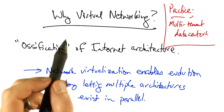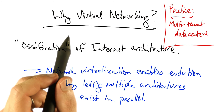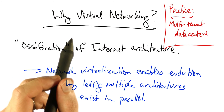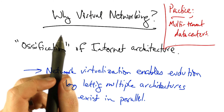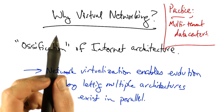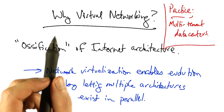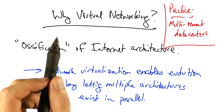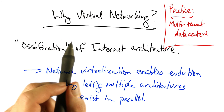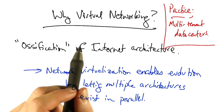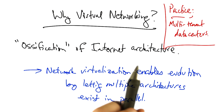Large service providers such as Google, Yahoo, and so forth also use network virtualization to adjust the resources that are devoted to any particular service at a given time.